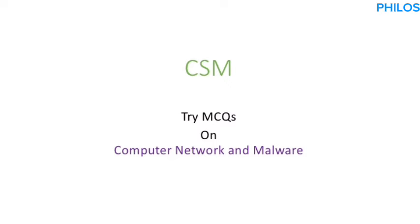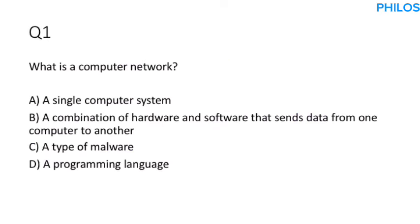Without wasting much time, let's start. Question one: What is a computer network? A computer network consists of hardware and software that facilitate the sharing of data and resources. The correct answer is option B: a combination of hardware and software that sends data from one computer to another.